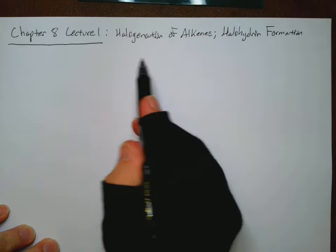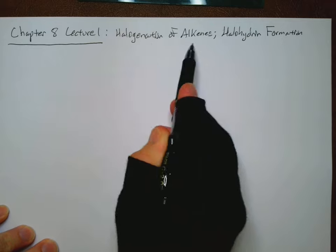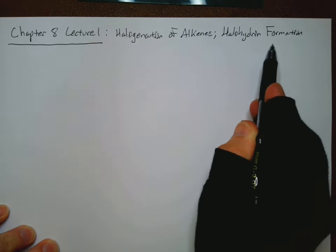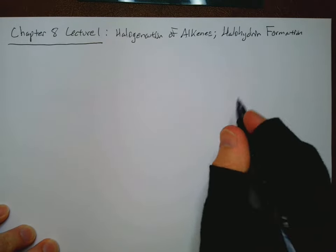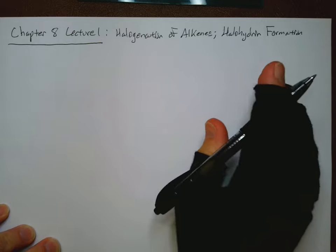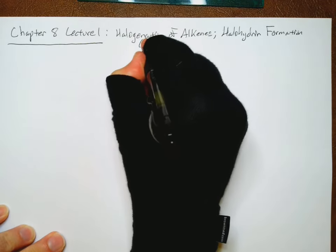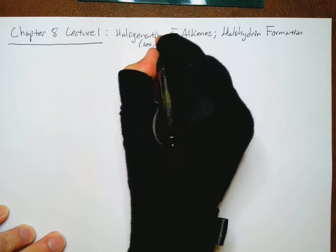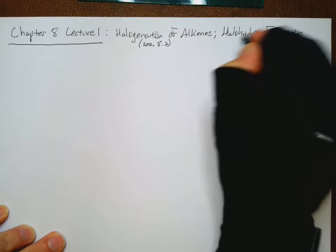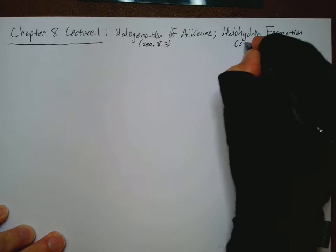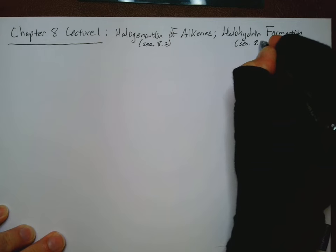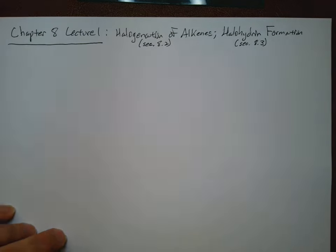In this lecture, I'm going to look at the halogenation of alkenes as well as halohydrin formation. Now, I should note that the halogenation of alkenes is Section 8.2, and halohydrin formation is Section 8.3. So for right now, don't worry about Section 8.1. You can read about it. It's really just a preview of a later chapter.